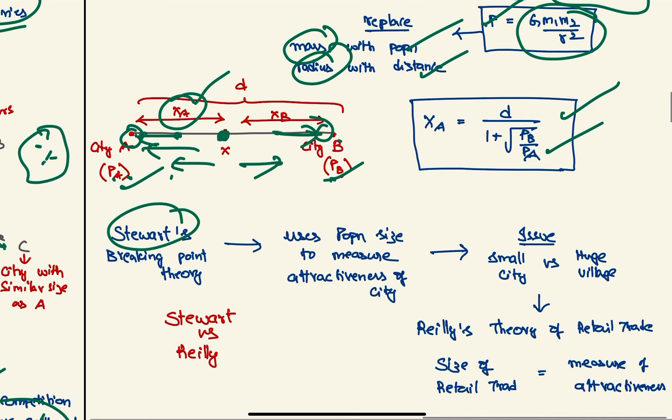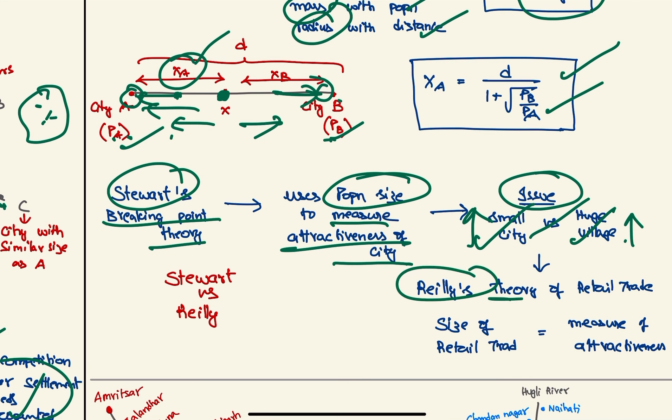Stewart's breaking point theory uses population size to measure the attractiveness of the city. But the issue is that if you are comparing a small city and a huge village, the population of the village will be higher, but obviously the city is more urban. So that is the problem. To fix that, Reilly gave his theory of retail trade, where he considers size of retail trade as a measure of attractiveness rather than the population size.